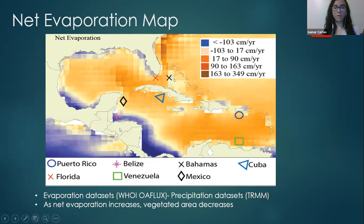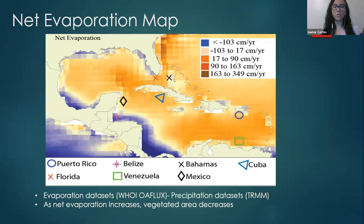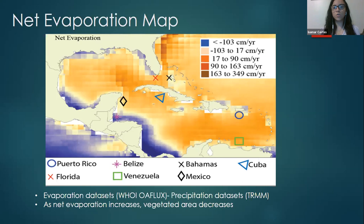For example, if you're in Belize, you can assume that mangrove islands there are going to have a lot of vegetation because they're in a low to negative net evaporation region, as opposed to mangrove islands in Florida, where these islands are under a lot of stress due to high net evaporation rates, and there will be less vegetation within this region.